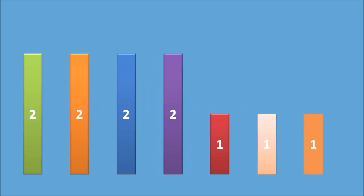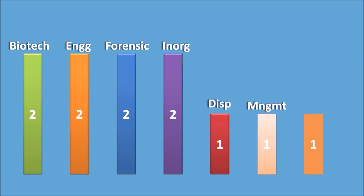From minor subjects: Biotechnology had 2 questions, Engineering 2 questions, Forensic 2 questions, Inorganic Chemistry 2 questions, Dispensing Pharmacy 1, Management 1, and Medicinal Chemistry 1 — totaling 11 questions from these minor subjects in GPAT 2018.